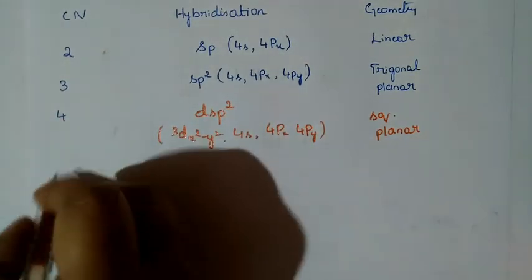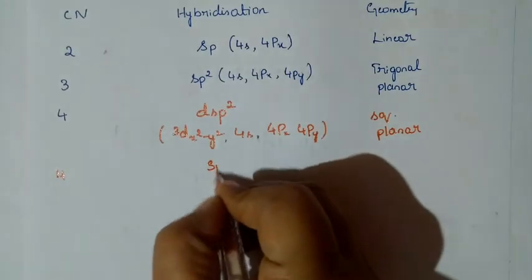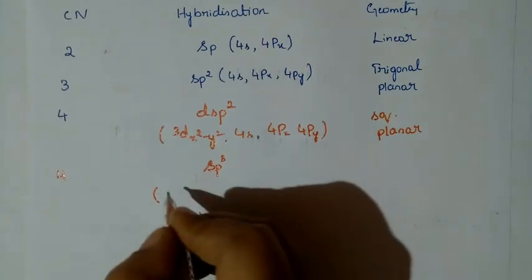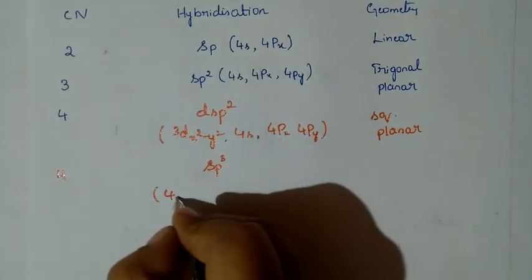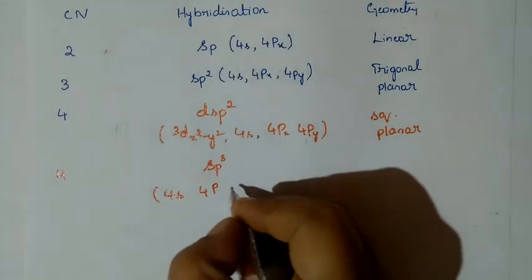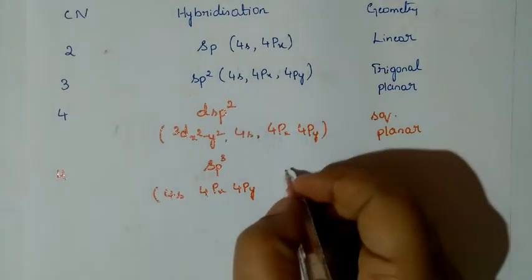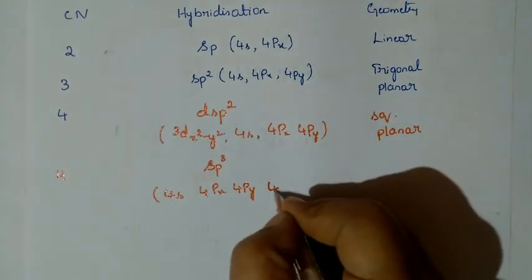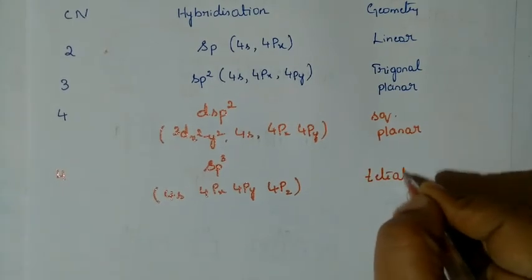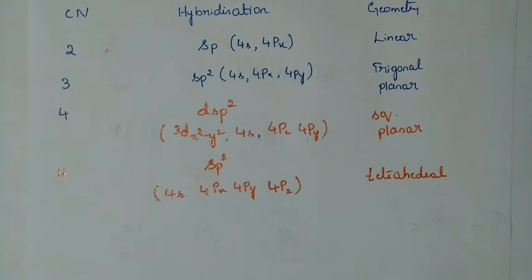For coordination number 4, there are different combinations. SP3 hybridization involves 4S, 4PX, 4PY, and 4PZ. The geometry for SP3 is tetrahedral.